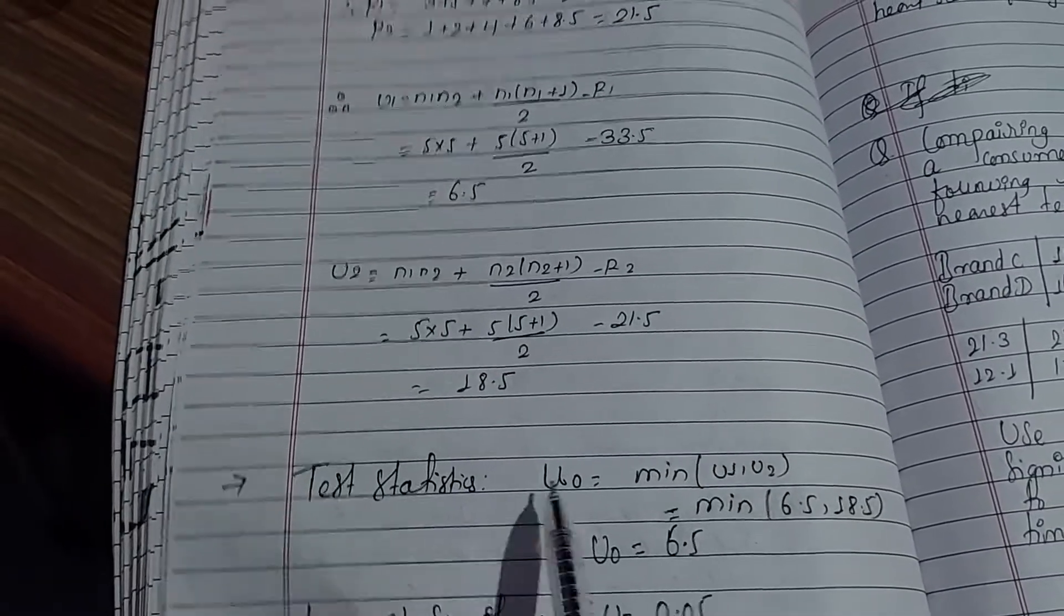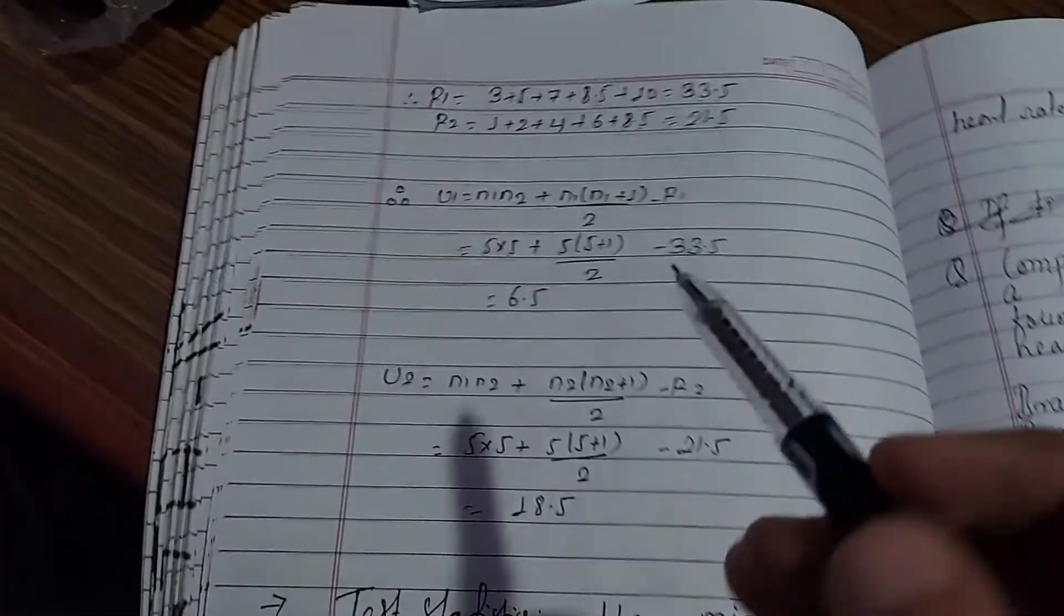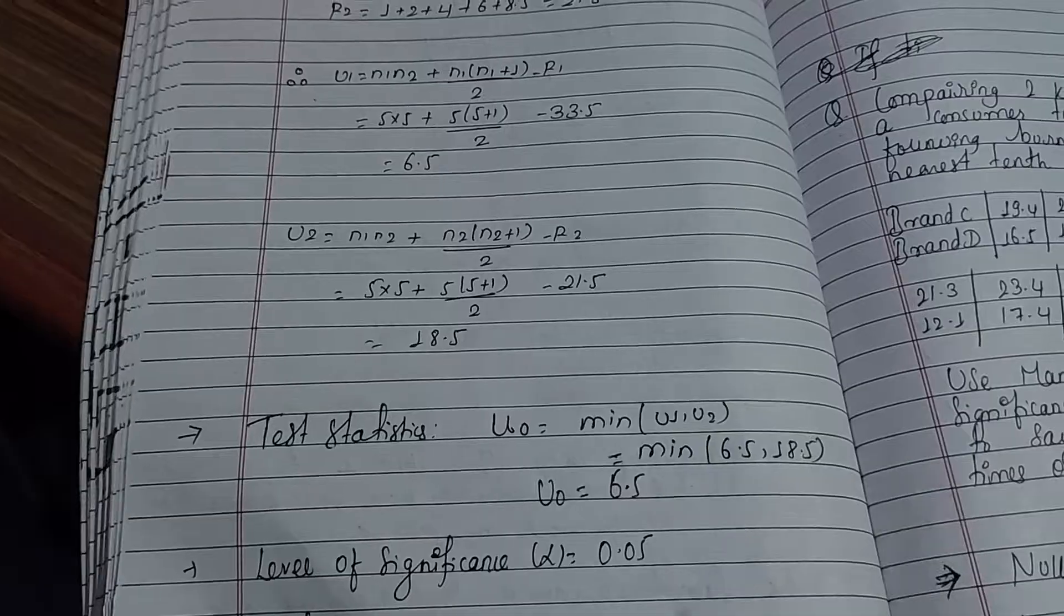Our test statistic value U = 6.5. Now we need to use the significance level of 5% to find the critical value from the table.